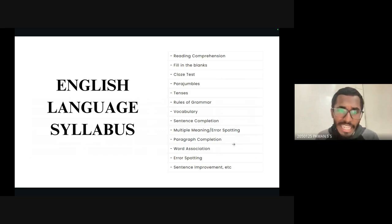Starting with the English language syllabus, you need to know reading comprehension, fill in the blanks, cloze test, para jumbles—when jumbled word sentences are given, how you analyze and put your contextual knowledge. It's important to learn about all kinds of tenses, rules of grammar, vocabulary, sentence completion, multiple meaning, error spotting, paragraph completion, word association, and sentence improvement.